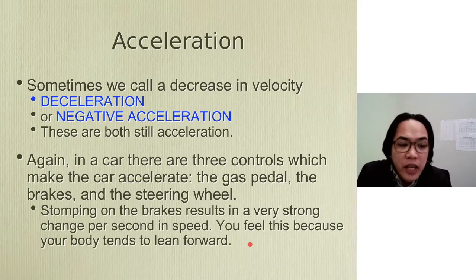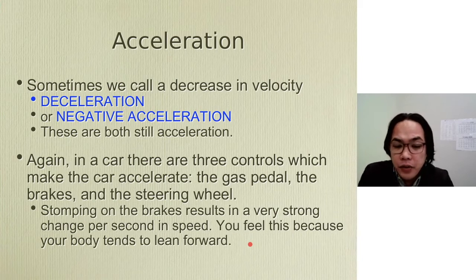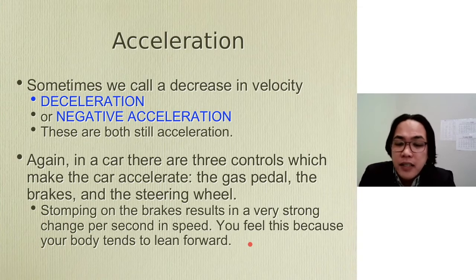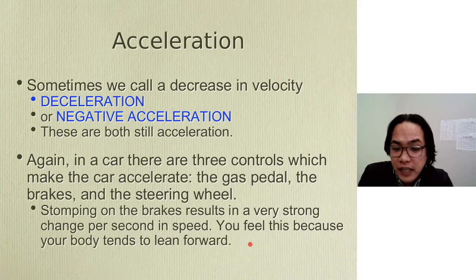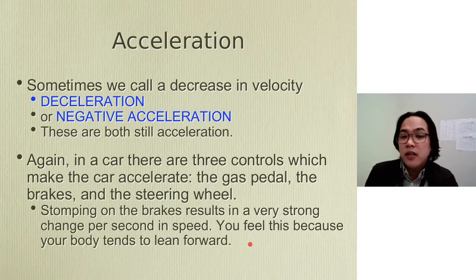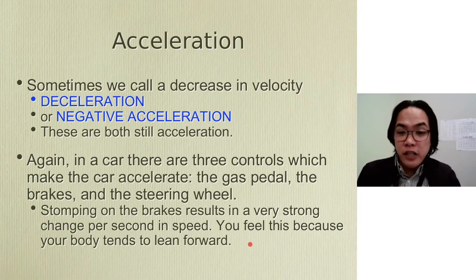In the warmup we had earlier, in a car there are three important controls which make it accelerate. That's the main purpose of your gas pedal, the brakes, and the steering wheel — to accelerate either to speed up, slow down, or to change direction. Stomping on the brakes, for example, results in a very strong change per second in speed or velocity. You feel this because your body tends to lean forward, especially when you just stomp it right away — that means acceleration is changing.